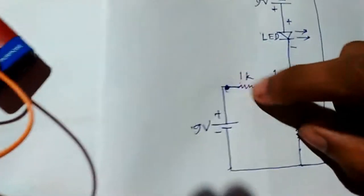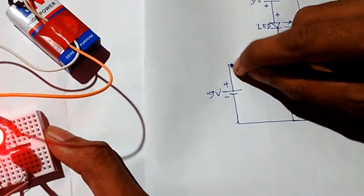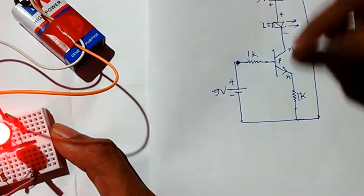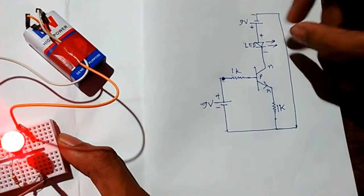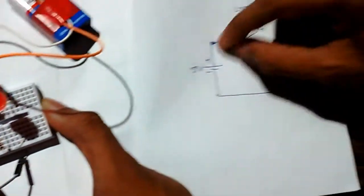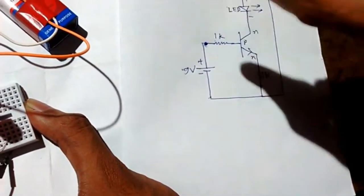That means the transistor acts as a switch. If this switch is off, if it is not connected, then the current cannot flow from positive to negative terminal, so this LED turns off. And when this switch is on, that means when there is positive voltage across its base terminal, then it switches on, this current can flow, and the LED turns on.